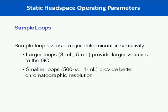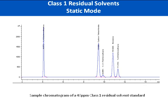In terms of the sample loops used in headspace analyzers, you have to balance the factors described. When the analyzer steps to fill the sample loop after the vial has been pressurized, probably the best way to determine the optimal loop fill time is to attach a flow meter to the vent and monitor the flow. Larger loops, like your 3 and 5 mil loops, are going to provide larger volumes going to your GC, while your smaller loops — 100, 250, 500 microliter, and even 1 mil — are going to provide better chromatographic resolution.